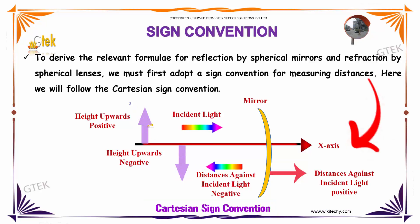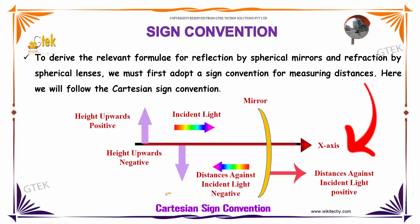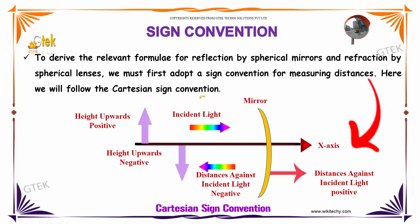If the object is placed and light is incident on the mirror, the distance against the direction of incident light is called negative. Distance towards the incident light is called positive. The height measured upwards is positive and downwards is negative. This is called Cartesian sign convention.